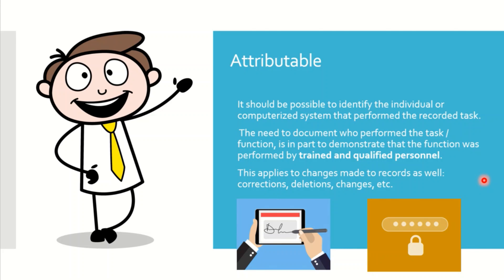Similarly, for an electronic system, when you enter your password and user ID, that is attributable — it records who ran the machine. For example, if your shift is ending and you're in a hurry and forget to sign your document, and you ask your friend to sign on your behalf — this violates the attributable principle. Your friend cannot sign on your behalf.